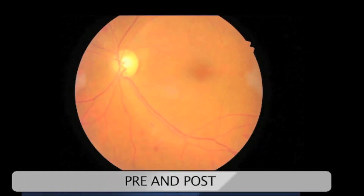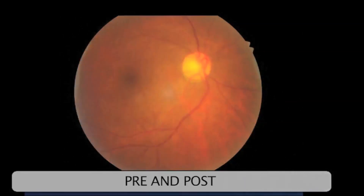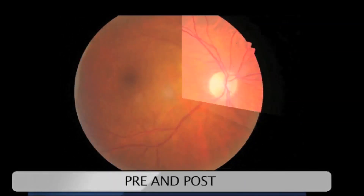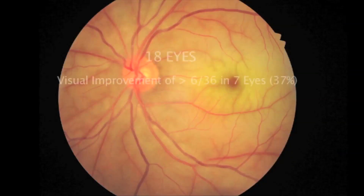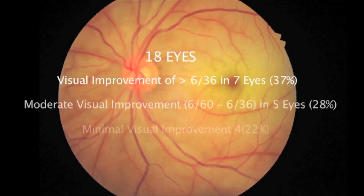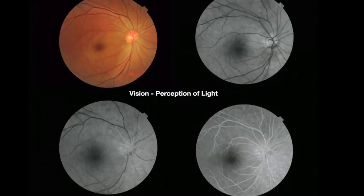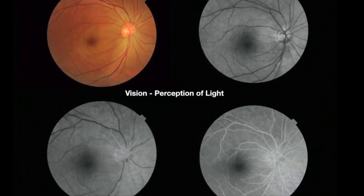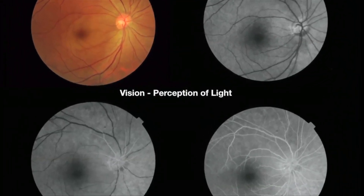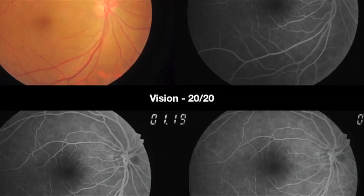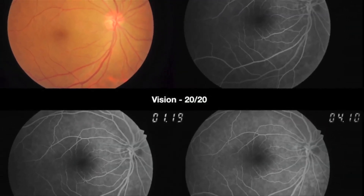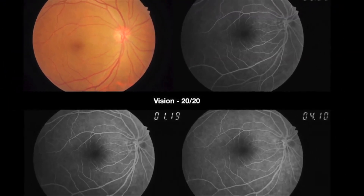Encouraged by the results, we have done this procedure in 18 eyes with central retinal artery occlusion and have got very positive results. The most gratifying result was in this 40-year-old cardiac anesthesiologist who presented with a vision of only perception of light. She was operated within three hours of the onset of CRAO and went on to recover 20/20 vision.